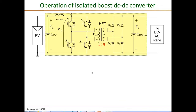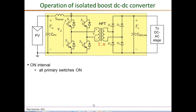The complete schematic of the isolated boost DC-DC converter has an input inductor, followed by four switches performing the role of S1 in the non-isolated case, connected to a high frequency transformer. On the secondary side there is a full-wave rectifier with four high frequency diodes and an output capacitor. During the on interval, all four primary-side switches are on, connecting the boost inductor directly across the input voltage so that current and energy in the inductor build up.